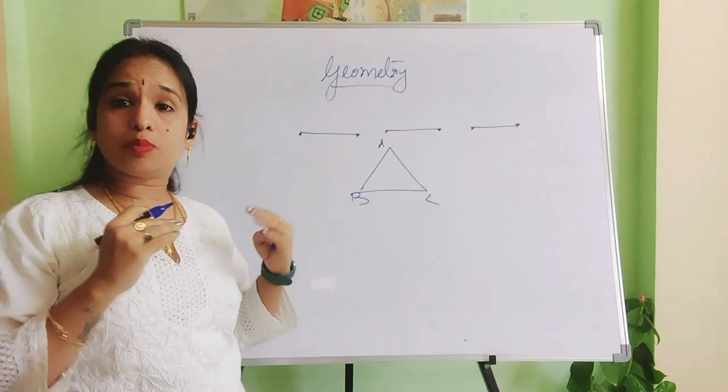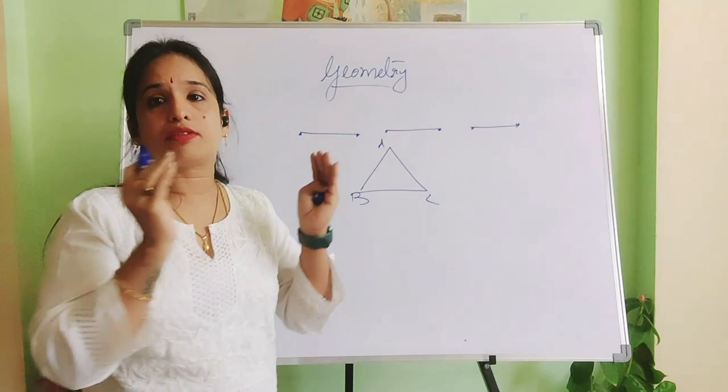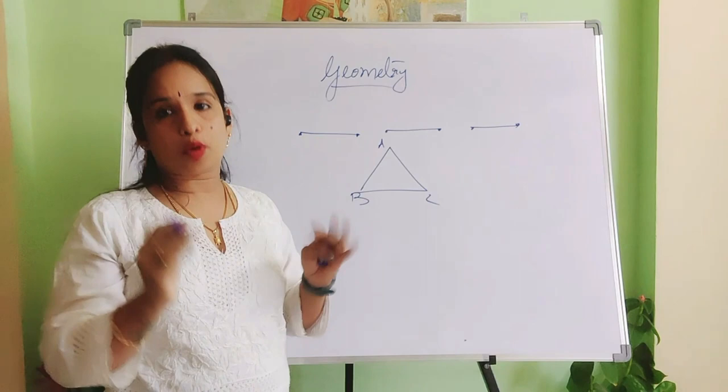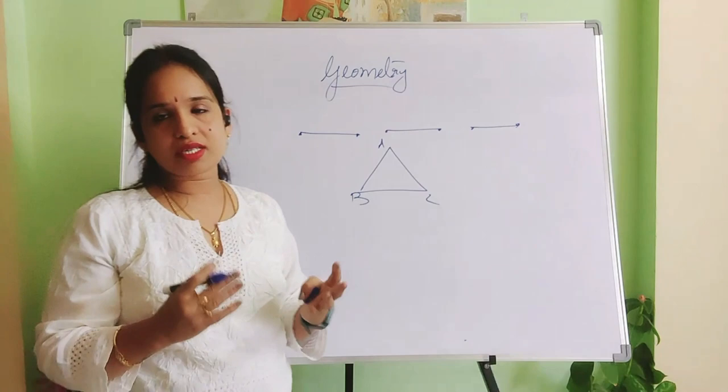So let us see how the smallest polygon is formed using three line segments. These three lines are required to form a triangle. It is the smallest polygon — not in terms of angle measures or the length of the lines, but with respect to the number of line segments used to form a closed figure. This closed figure is called a triangle, and that is the smallest polygon.